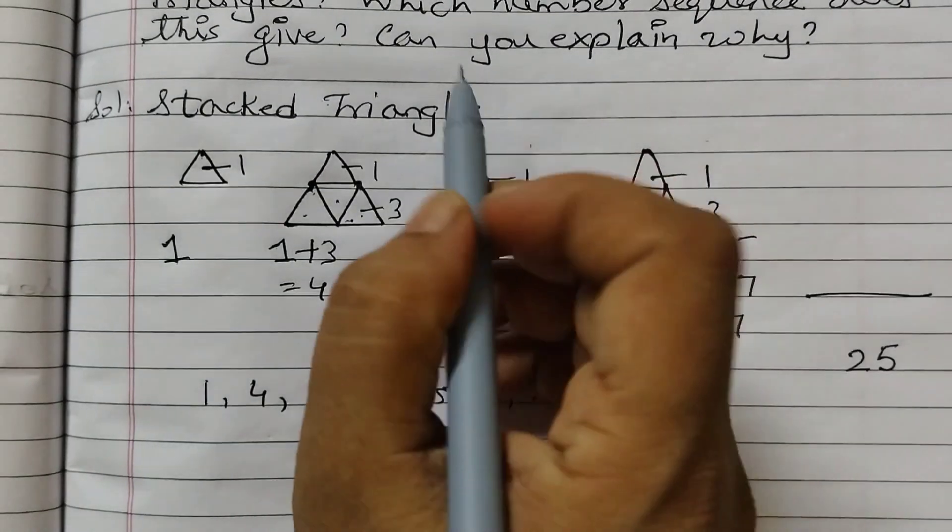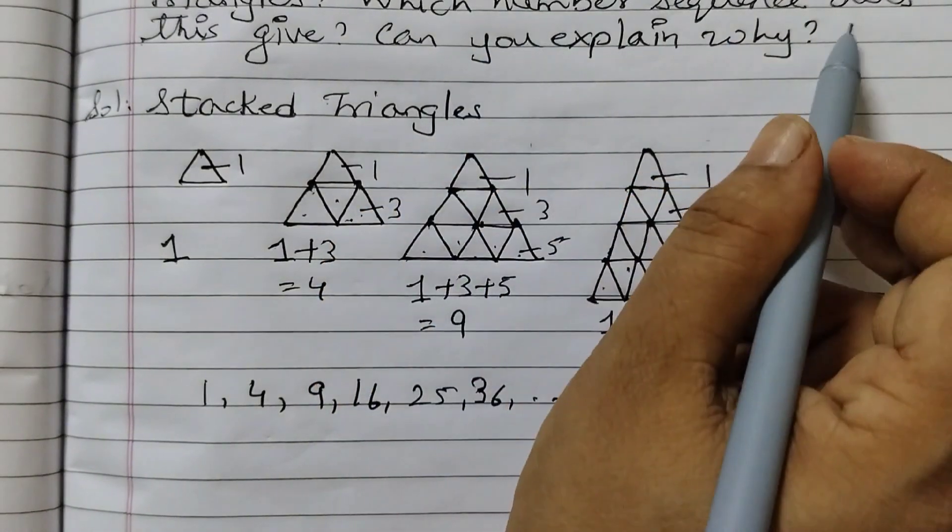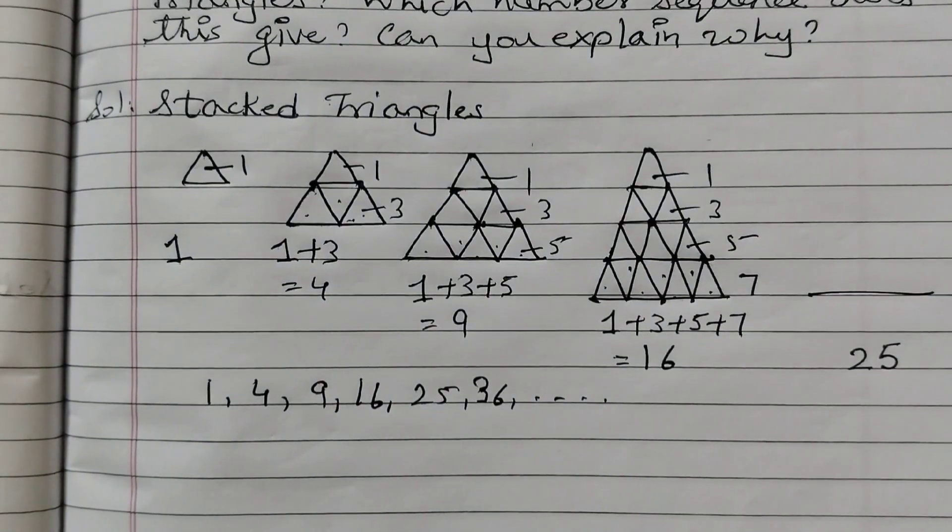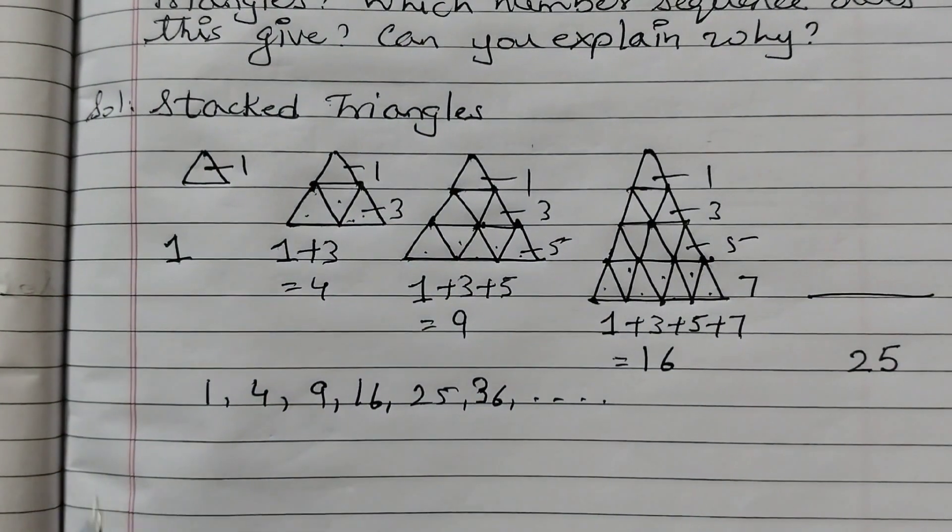And the second part, which number sequence does this give? So you can write: we get the sequence of square numbers.